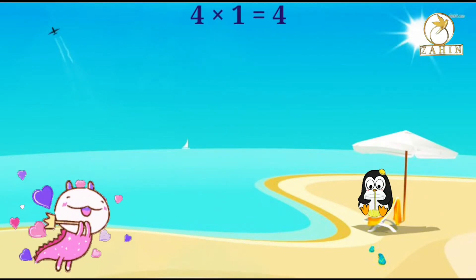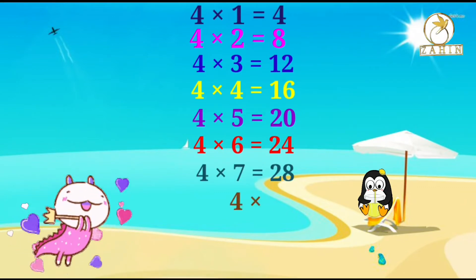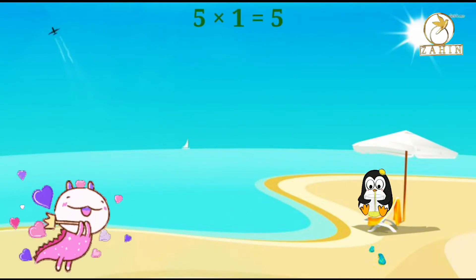4 times 1 equals 4, 4 times 2 equals 8, 4 times 3 equals 12, 4 times 4 equals 16, 4 times 5 equals 20, 4 times 6 equals 24, 4 times 7 equals 28, 4 times 8 equals 32, 4 times 9 equals 36, 4 times 10 equals 40. 5 times 1 equals 5.